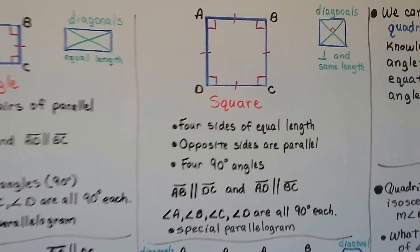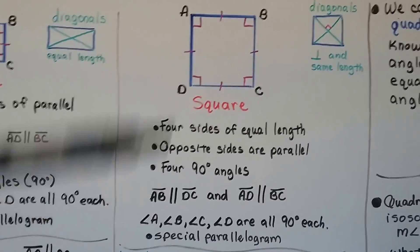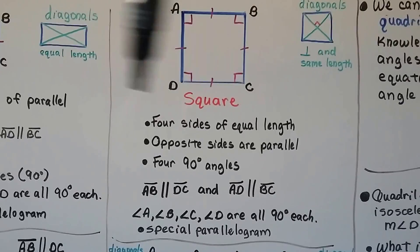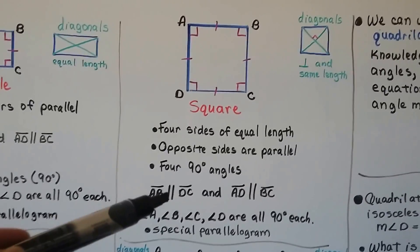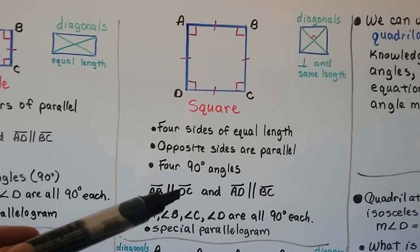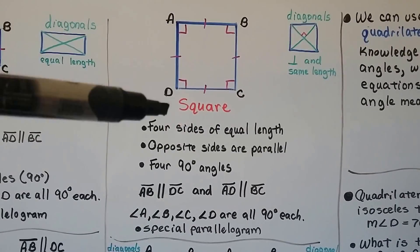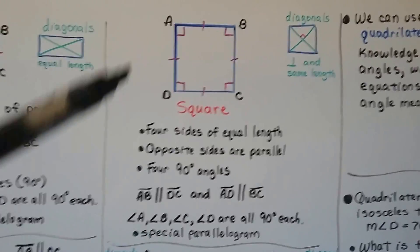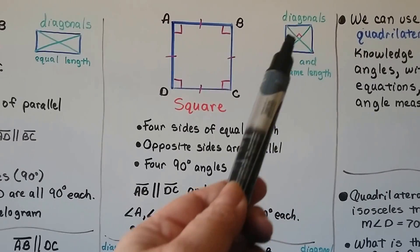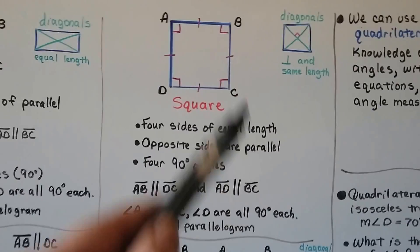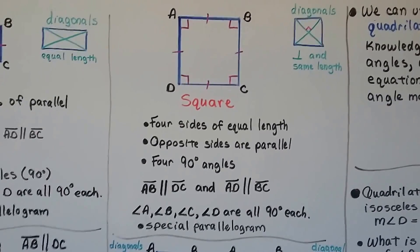Here we have a square. It's got four sides of equal length and all sides are the same measure. Its opposite sides are parallel — line AB is parallel to DC and AD is parallel to BC. All the corners are 90 degrees, and its diagonals are perpendicular to each other — see the little right angle mark in there — and they're the same length. It's considered a special parallelogram.